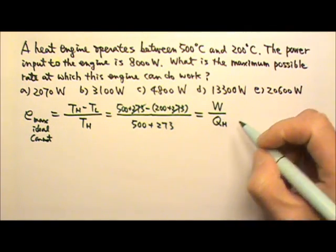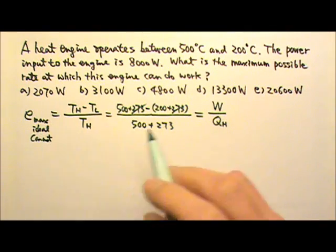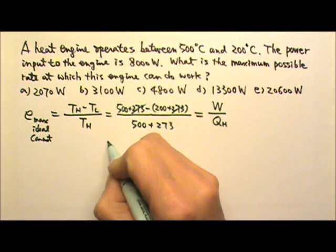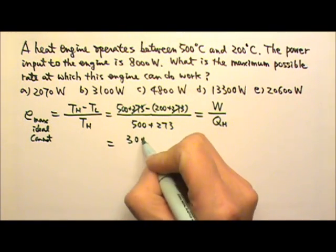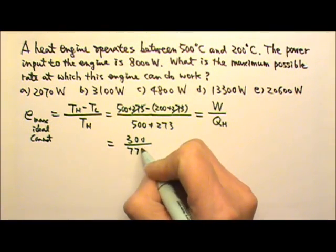So W over QH is also the efficiency. And this part here, we have 300 divided by 773.